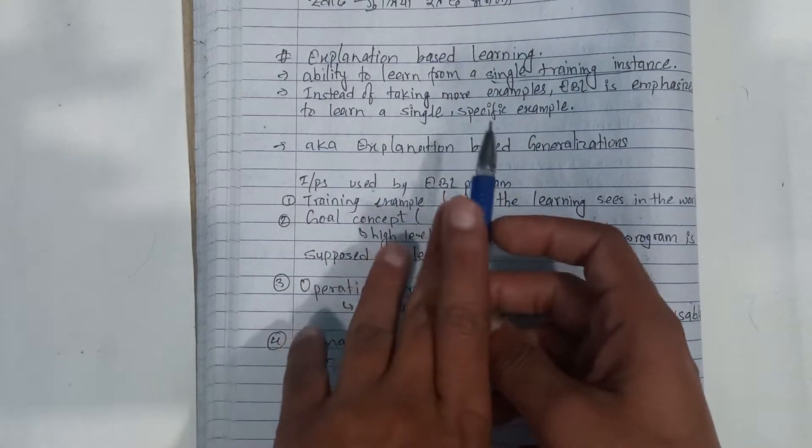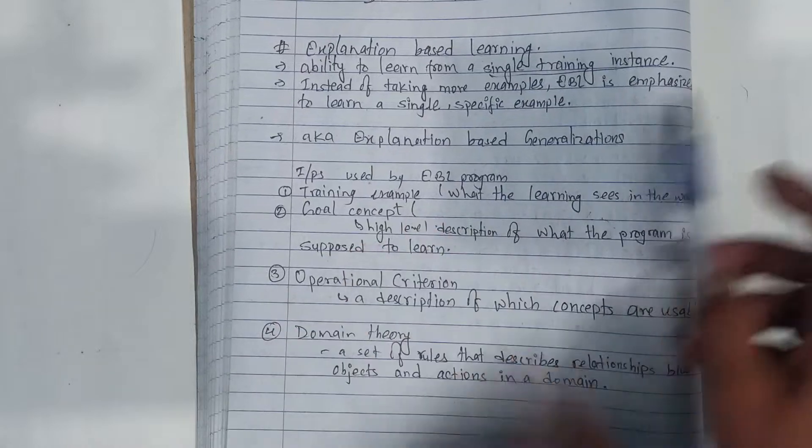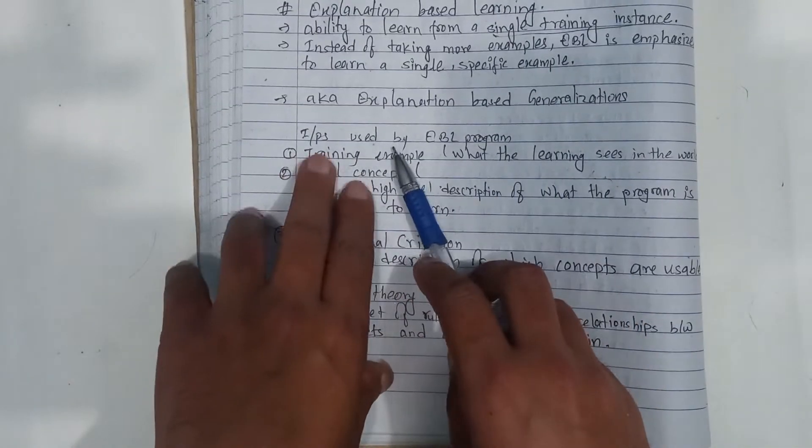This is also known as Explanation Based Generalization. How do you do that? Now, what is important?